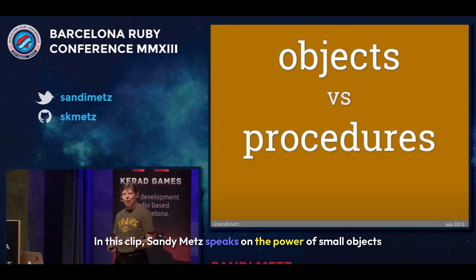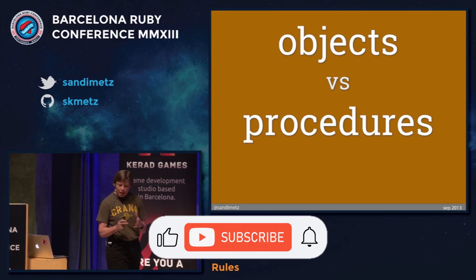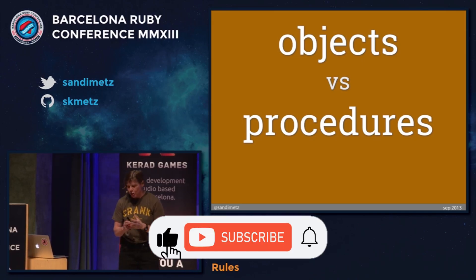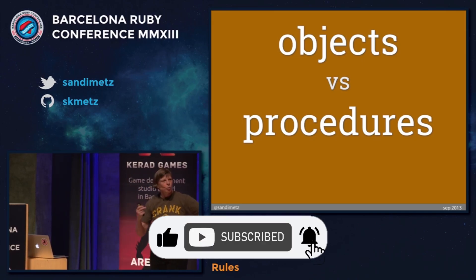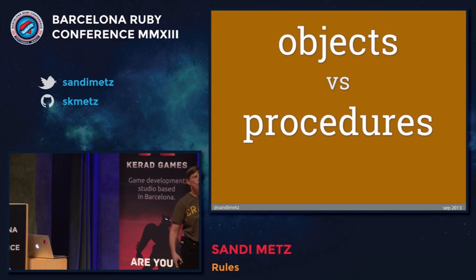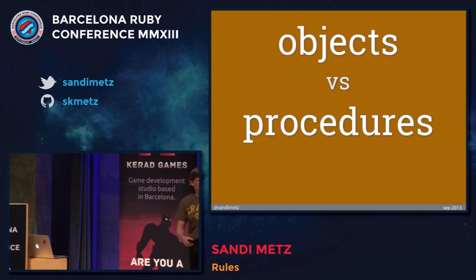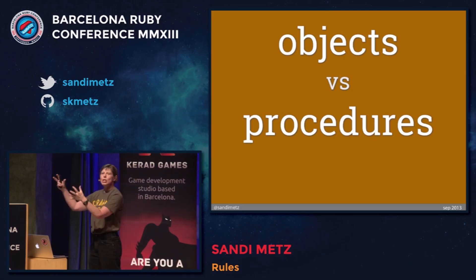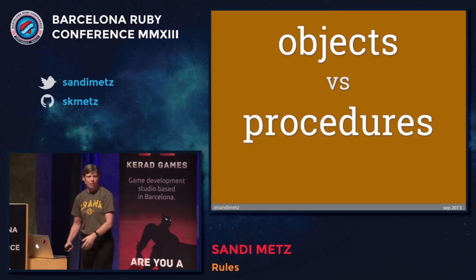In this clip, Sandy Metz speaks on the power of small objects and how they aid in the production of higher quality software. Imagine your application is on a continuum. On one side, you can have a few really large objects — long step-by-step procedures that have all the code in them. At the other end of the continuum, there's an application made of many small interacting objects.